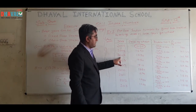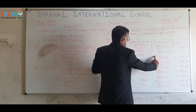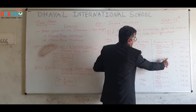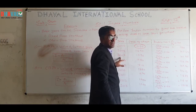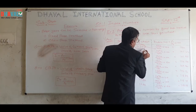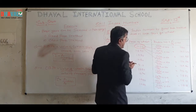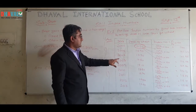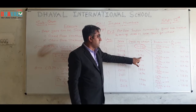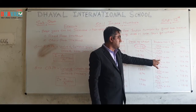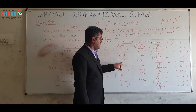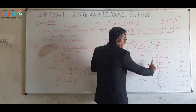For year 2007: price of current year is 1730, divided by price of base year 1650, into 100. Answer: 104.85. For year 2008: price of current year is 1750, divided by price of base year 1650, into 100. Answer: 106.06.